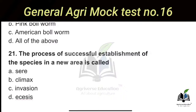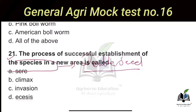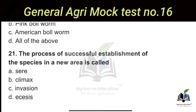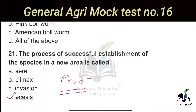The next question: The process of successful establishment of a species in a new area is called what? The right answer is Option D — Ecesis. Ecesis refers to plants that have evolved to live in a very distinct area and develop such that it becomes their habitat. This process is called ecesis, and such plants are called ecads.